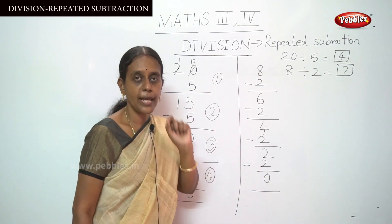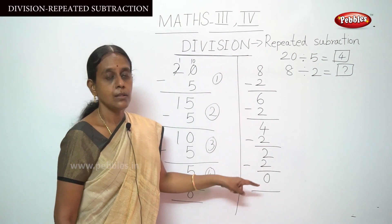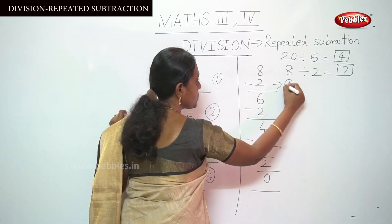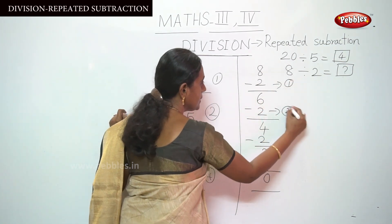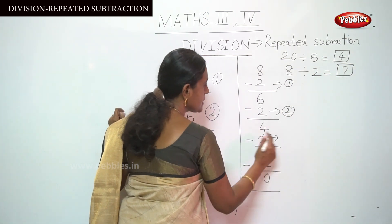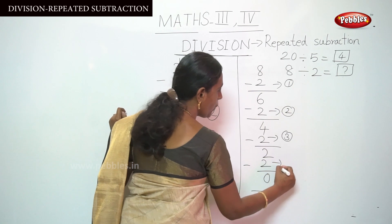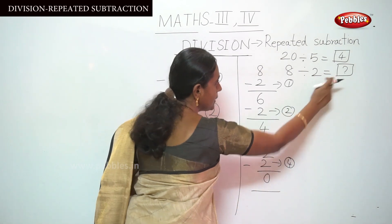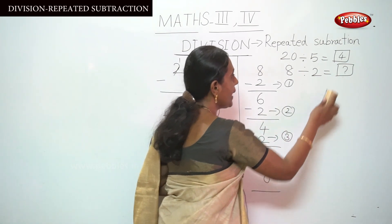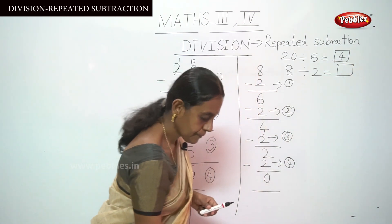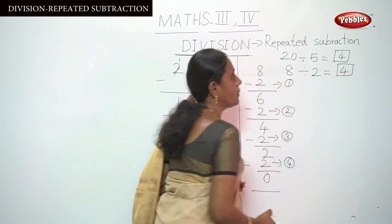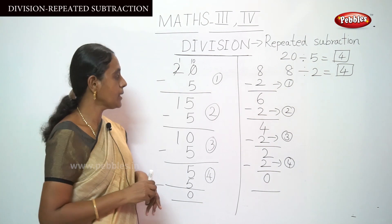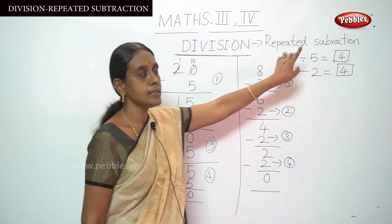Now you have to calculate how many times the subtraction is done. This is the first subtraction, second subtraction, third subtraction, and fourth subtraction. Count: 1, 2, 3, 4. Put the number here, that is 4. So 8 divided by 2 equals 4. This is the method to find the quotient by doing repeated subtraction.